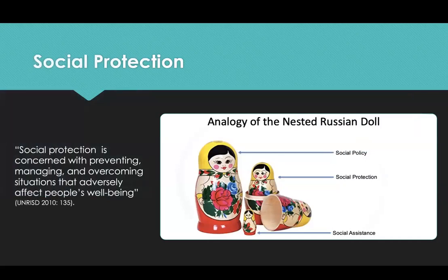In its 2010 flagship publication, Combating Poverty and Inequality, the United Nations Research Institute for Social Development argues that, and I quote: 'Protecting people from the vagaries of the market and life's changing circumstances is one of the main objectives of social policy. As a key component of social policy, social protection is concerned with preventing, managing and overcoming situations that adversely affect people's well-being.' End of quote.